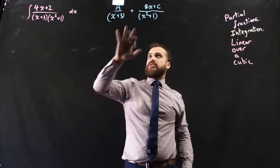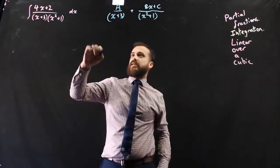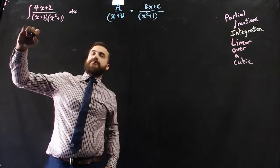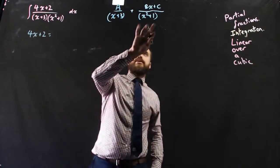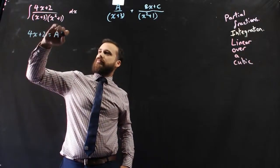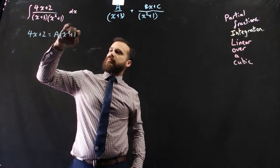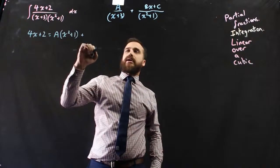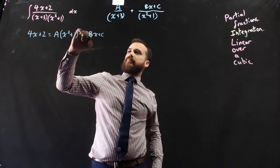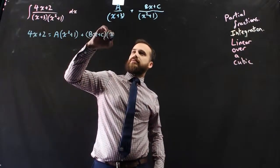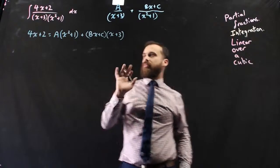So then when you turn this into a partial fraction, we can say that 4x plus 2 is going to be equal to a times that plus bx plus c times that.